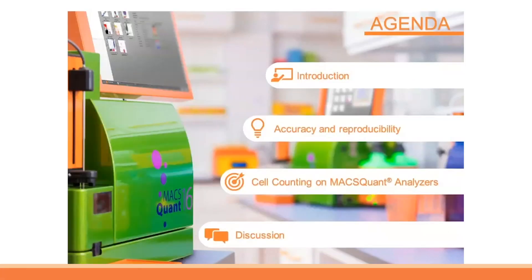Today we will be talking about cell counting and what to consider when doing it. I will give a short introduction before Martin will then continue and talk about accuracy and reproducibility, the two most important pillars of cell counting. We will then continue talking about cell counting on the MaxQuant analyzers and hopefully have a fruitful discussion with you.